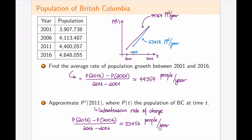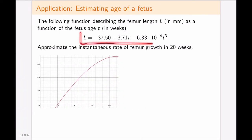We fully understand this is still an average, just computed around numbers closer to 2011. We can't do much better with five-year interval data. But if we have a formula for the function, we can pick how close we want to be and where to compute the two points for approximating the instantaneous rate of change.